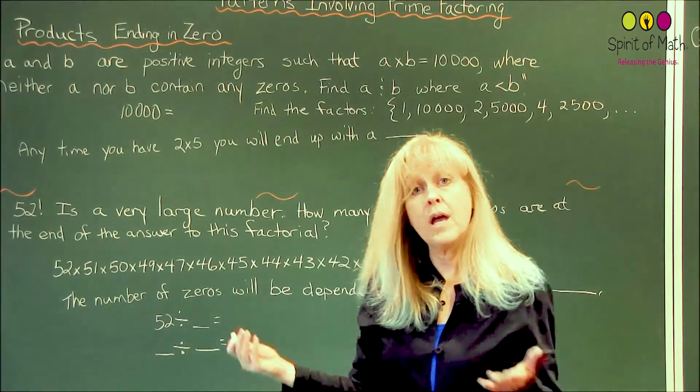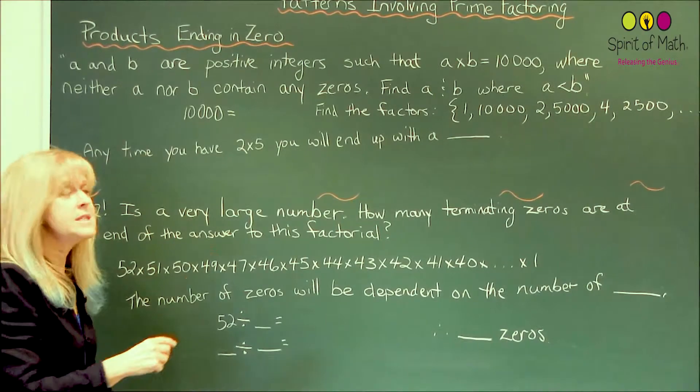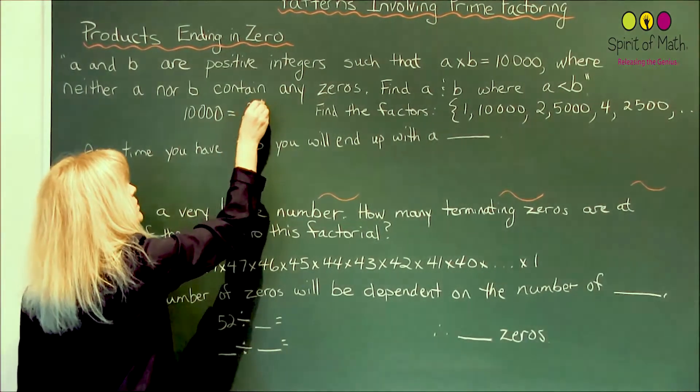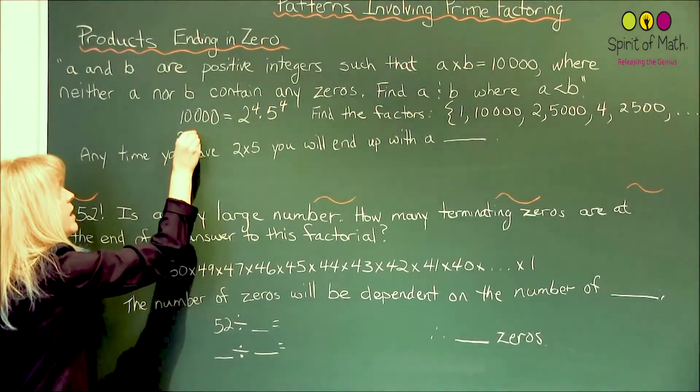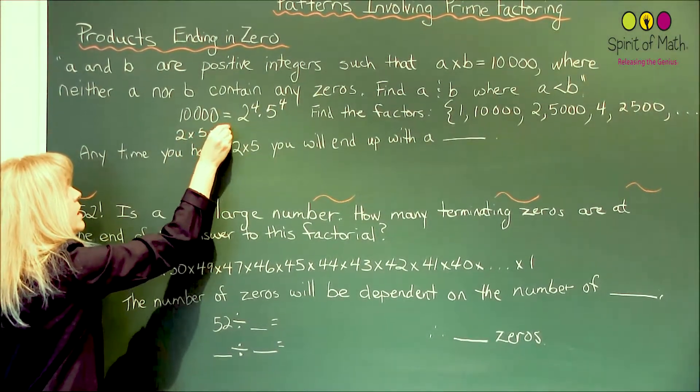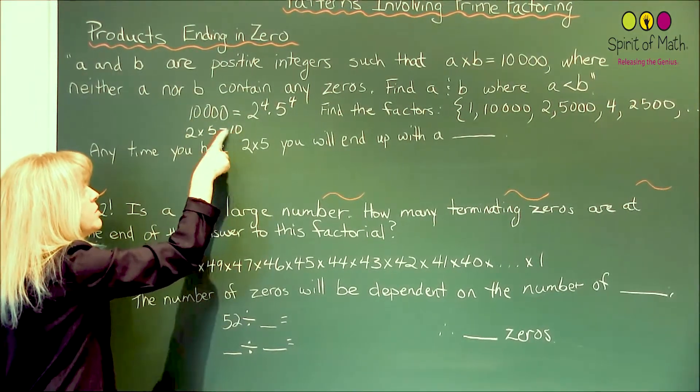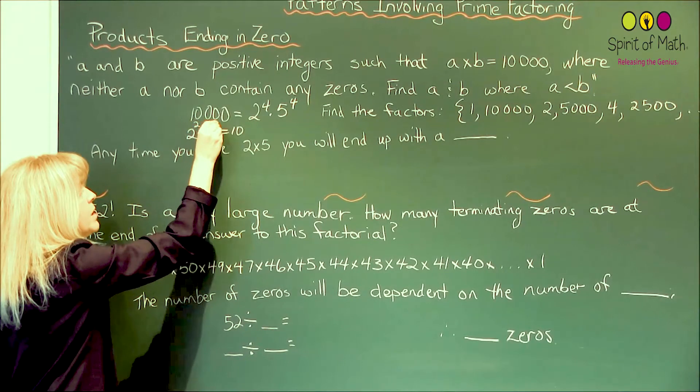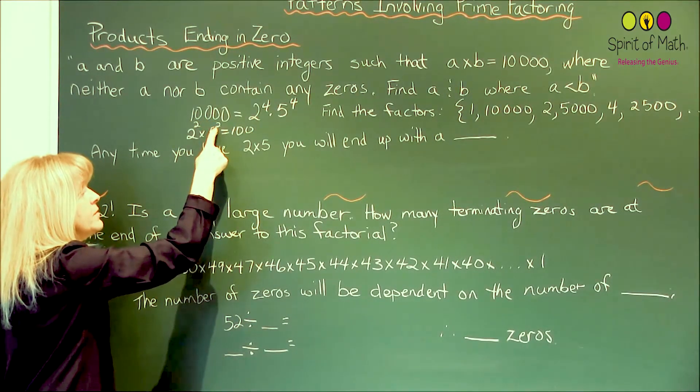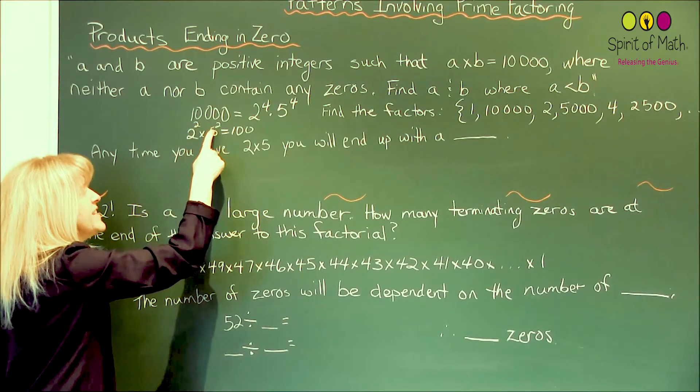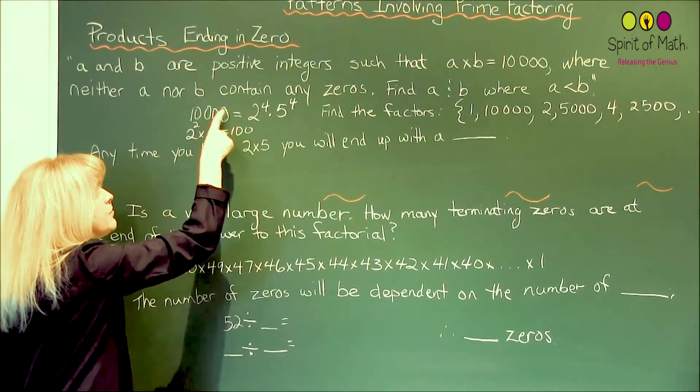So let's look at a different way, and it is prime factoring. You know that 10,000 is the same as saying 2 to the 4th times 5 to the 4th. And that I know because every time I have a 2 times 5, I'm going to get a 10. If you had 2 squared times 5 squared, that would have two zeros in it. 2 cubed times 5 cubed would have three zeros. And so 2 to the 4th times 5 to the 4th has four zeros.